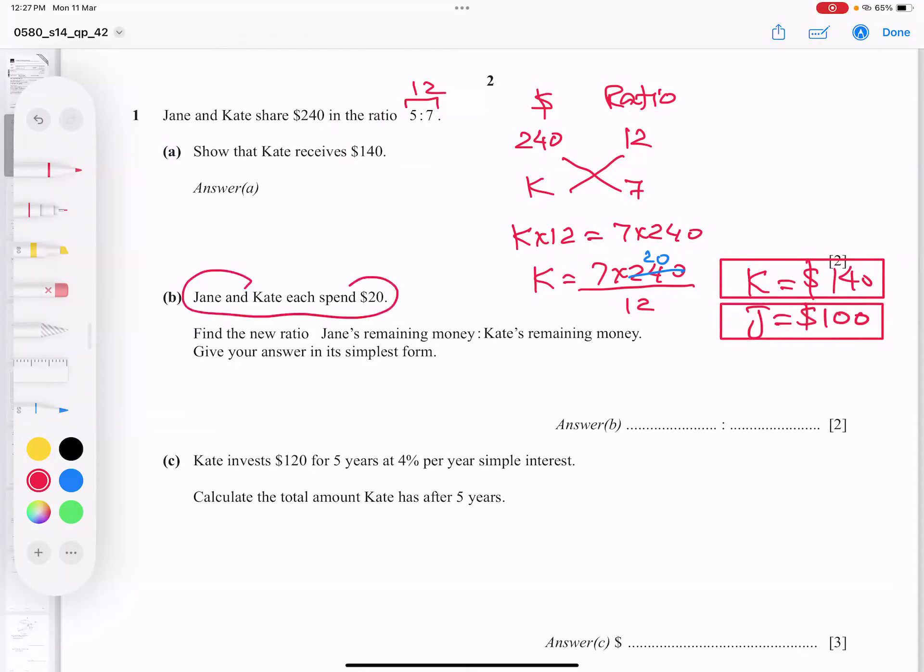Jane and Kate each spend $20. So in the beginning, Kate is this much. You can say Kate amount. And Jane, so I think we should write. Jane before, Kate later. Better to keep an order. So Jane's amount and Kate's amount.